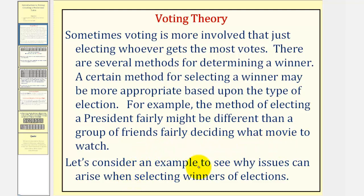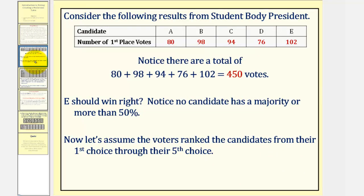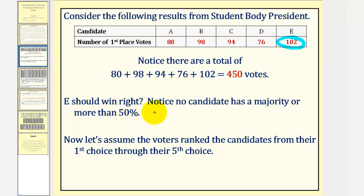Let's consider an example to see why issues can arise when selecting winners of elections. Let's begin by considering the following results from a student body presidential election. Notice how the candidates are listed in the first row from A through E, and the second row tells us the number of first place votes. Notice if we add the second row, this tells us there are a total of 450 votes. And since candidate E has the most votes at 102, E should win, right?